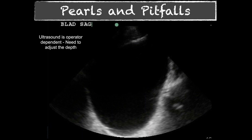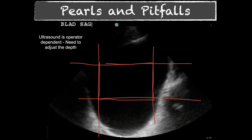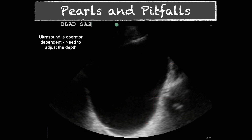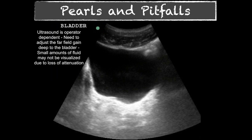Another common mistake is setting the depth too shallow when evaluating the bladder. The area of interest should be in the middle third of the image horizontally and vertically, with the back of the bladder wall positioned there so you can see posterior to it and detect any fluid. If the bladder wall is at the very bottom of the screen, there's no way to determine if there's free fluid beyond it.